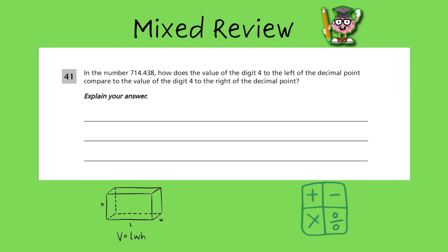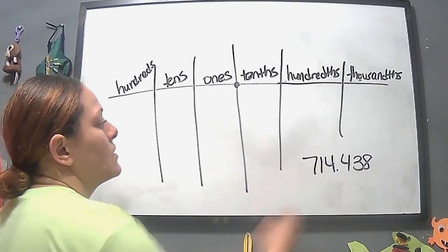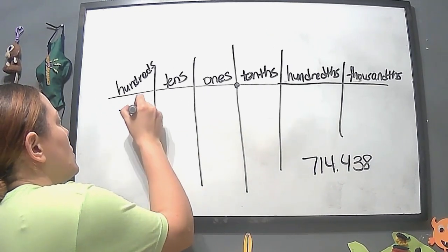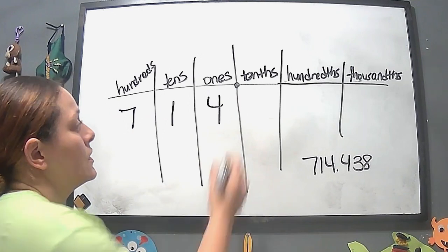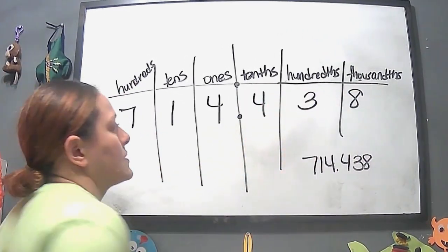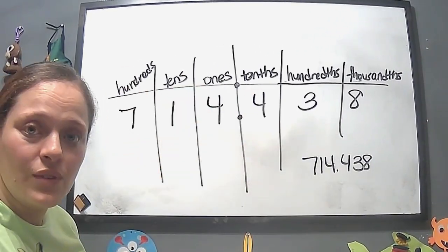And the number 714.438 or 714 and 438 thousandths, how does the value of the digit 4 in the left of the decimal point compare to the value of the digit 4 to the right of the decimal point? Just do the place value chart. So this is our number, or even if we write it there, but we have to put everything in the right order, right? So we have 714, and we have our decimal point, 438 thousandths. When we do that, now let's read the question again.